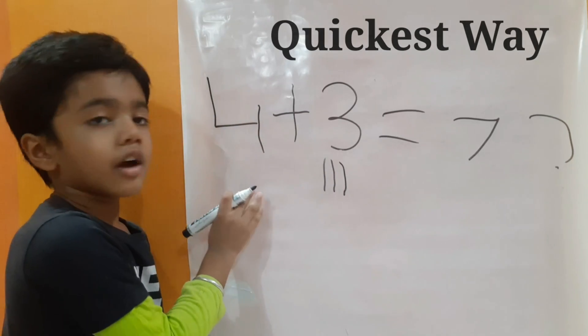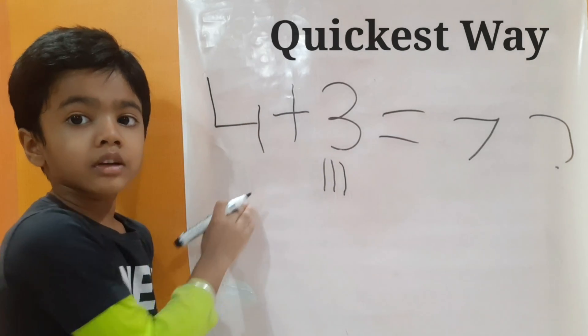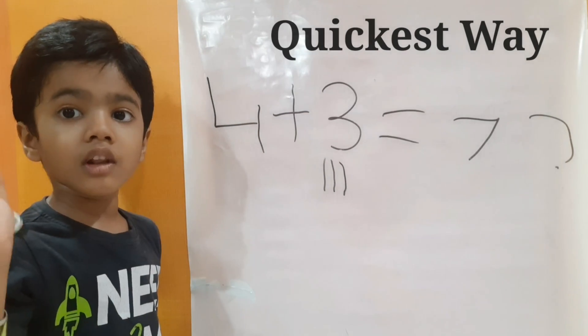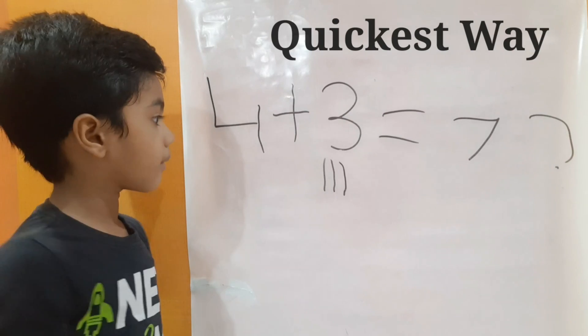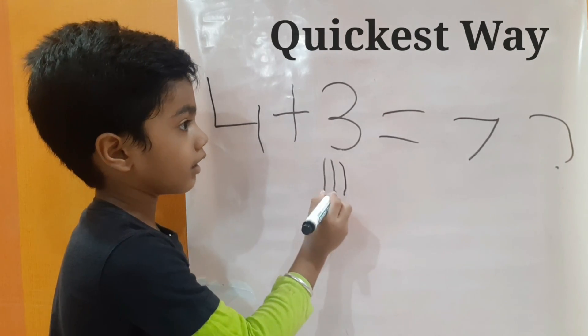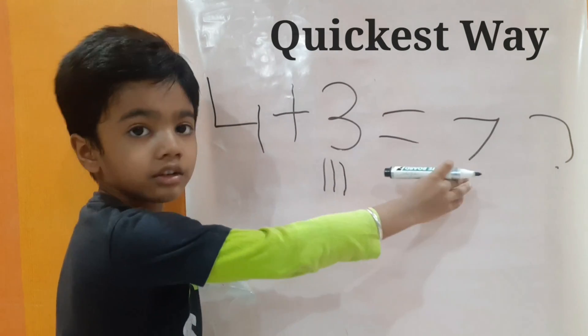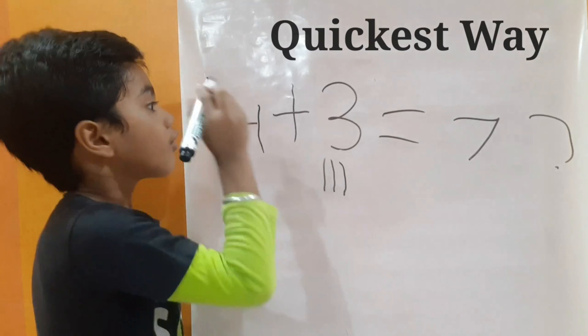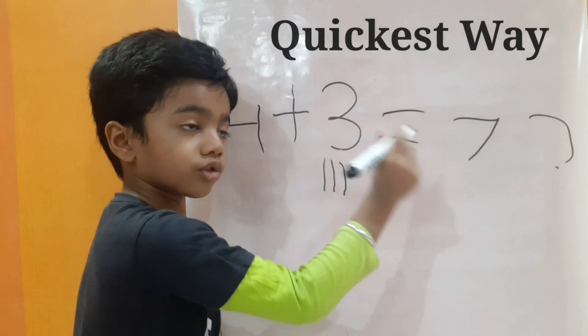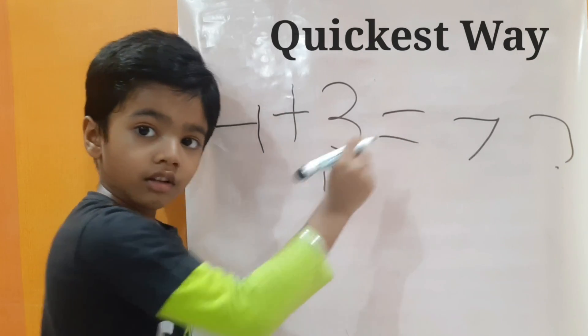On the left side we have 4. So what comes after 4? 5. So let's count from 5: 5, 6, 7. So the answer is 7. 4 plus 3 equals to 7.